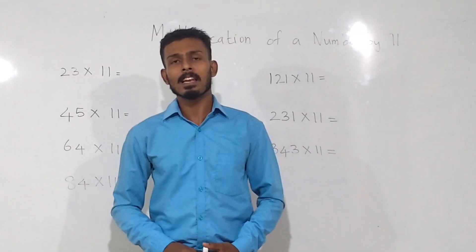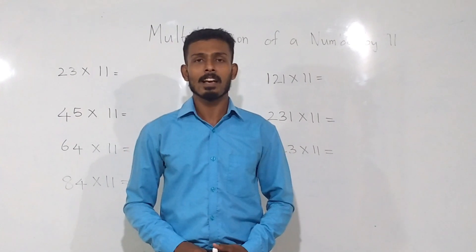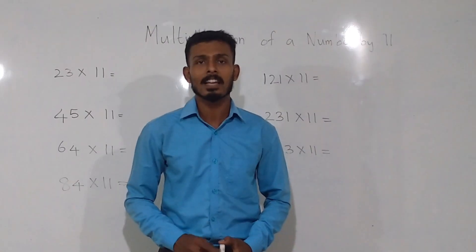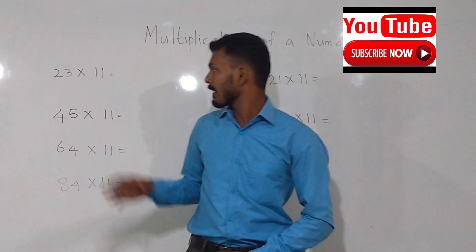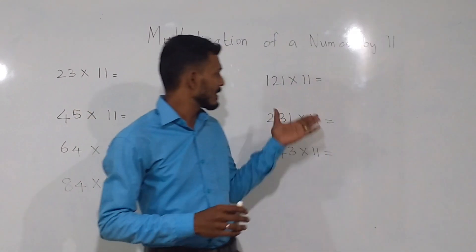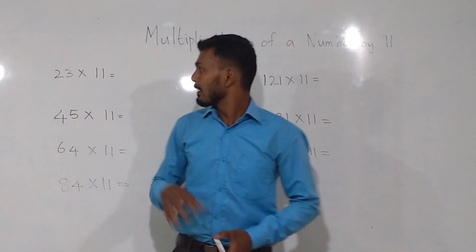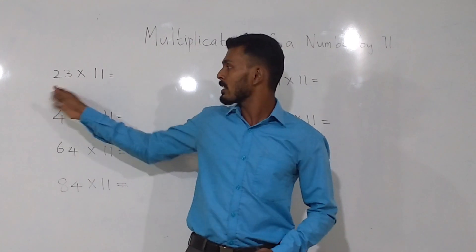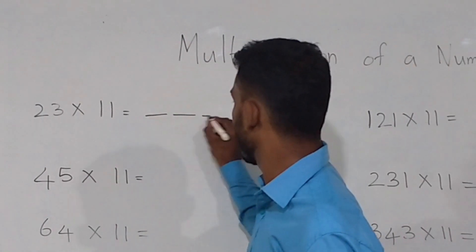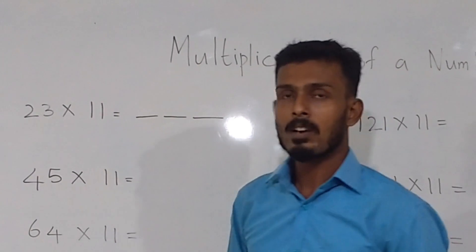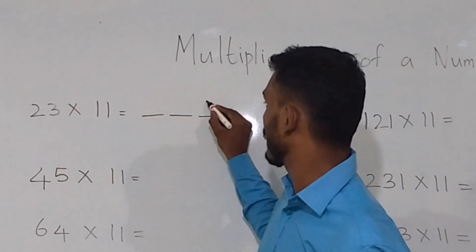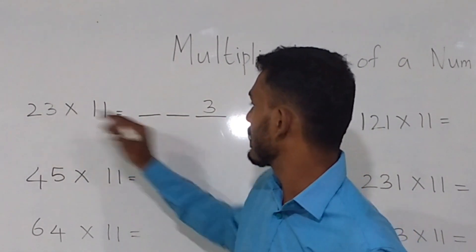How easily can we multiply on this board? We have two-digit multiplication and three-digit multiplication. First is the last digit, and first is the first digit.